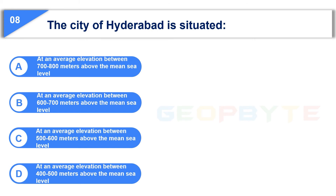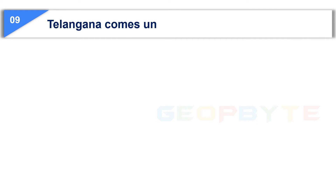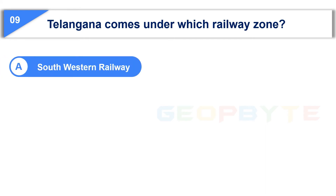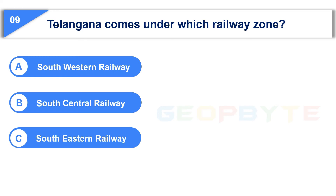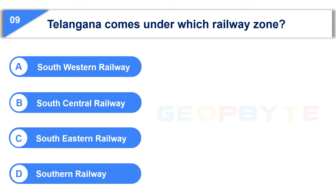Your time is up and the correct answer is Option C: at an average elevation between 500 to 600 meters above mean sea level. The ninth question is: Telangana comes under which railway zone? Option A: South Western Railway, Option B: South Central Railway, Option C: South Eastern Railway, Option D: Southern Railway. Your time starts now.